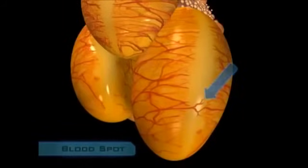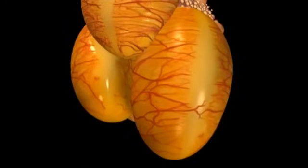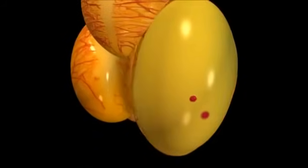If any blood vessels cross the stigma, a drop of blood may spot the yolk as it is released from the follicle.